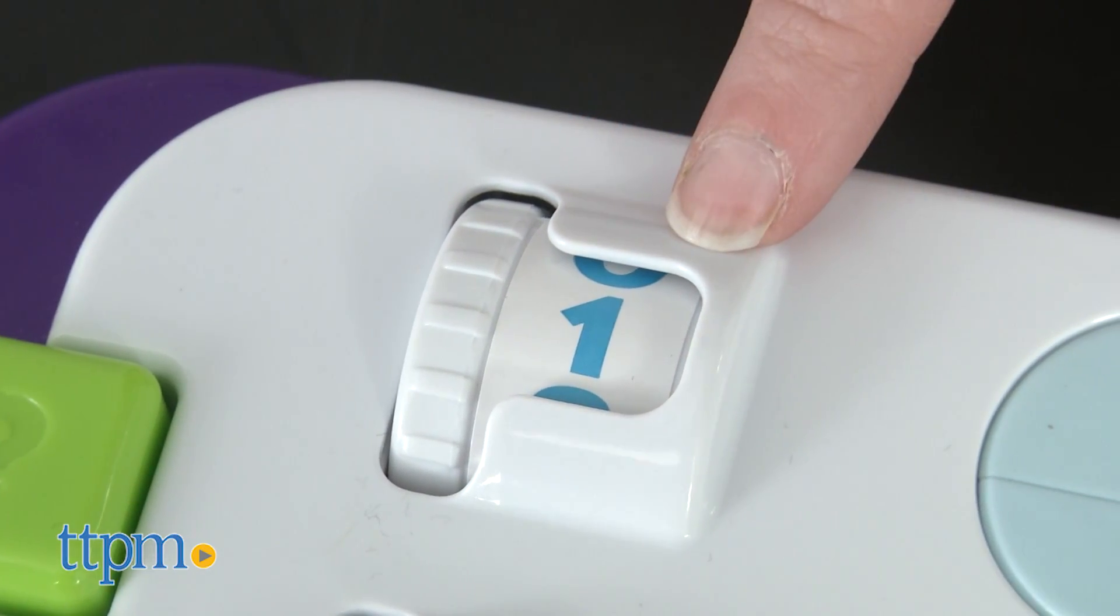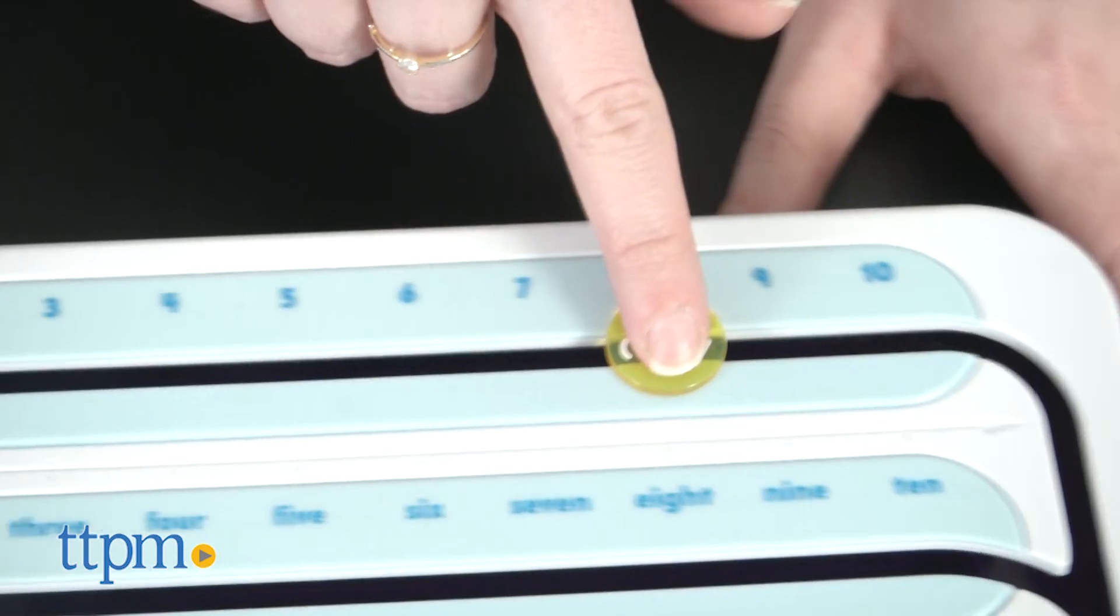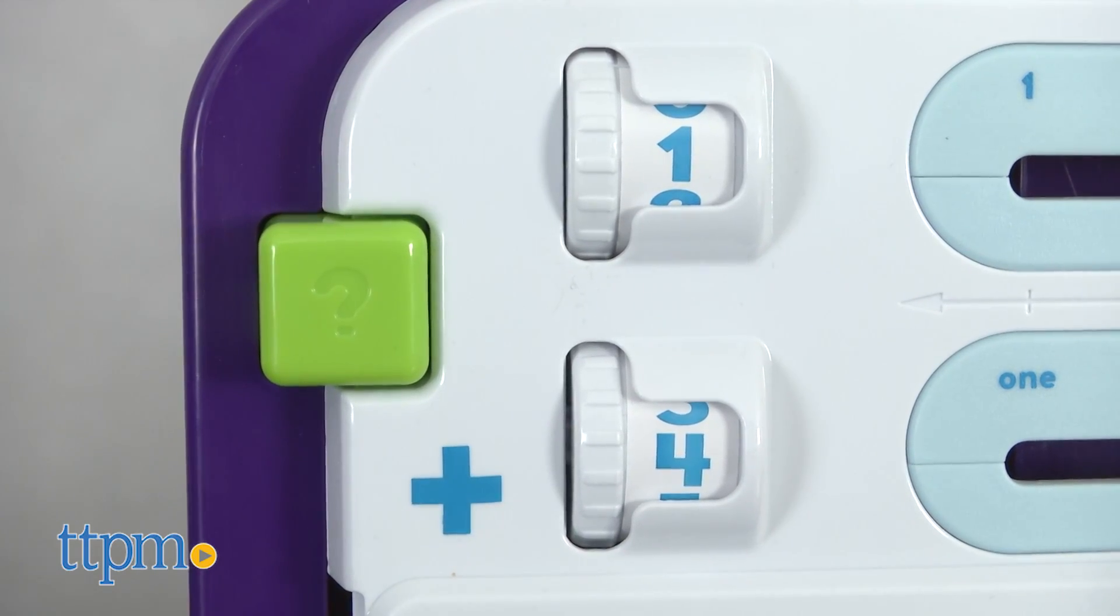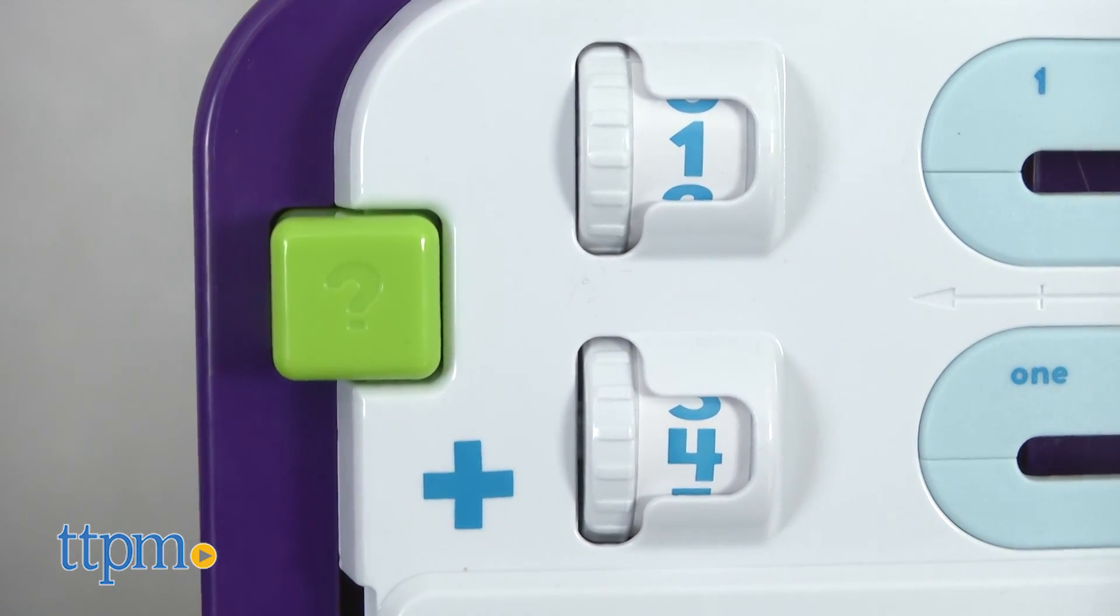This is a set that really does break things down for kids, allowing them to understand math basics in a way that suits each child. For example, there is the visual learning of seeing the numbers presented to them.